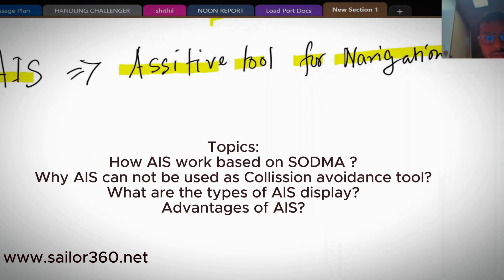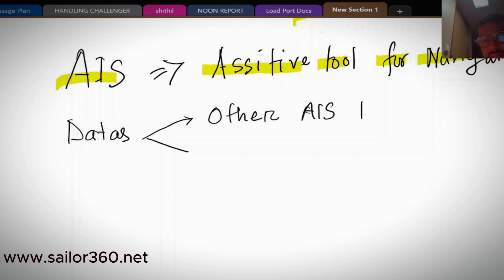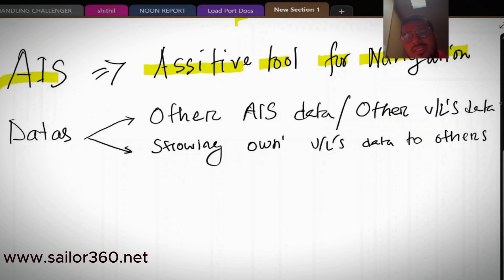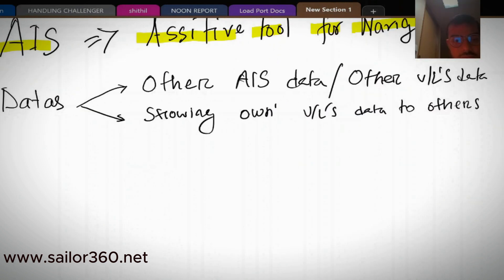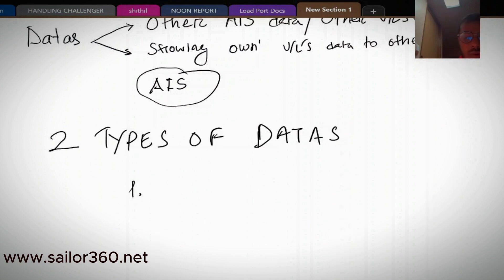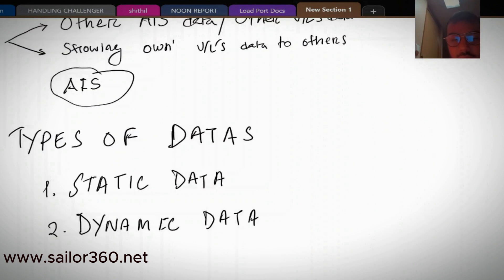AIS assists in navigation by providing data. The data is two-way sharing — you can see other vessels' data from your vessel, and your vessel's data is shown to other vessels. There are basically two types of data: static data and dynamic data.